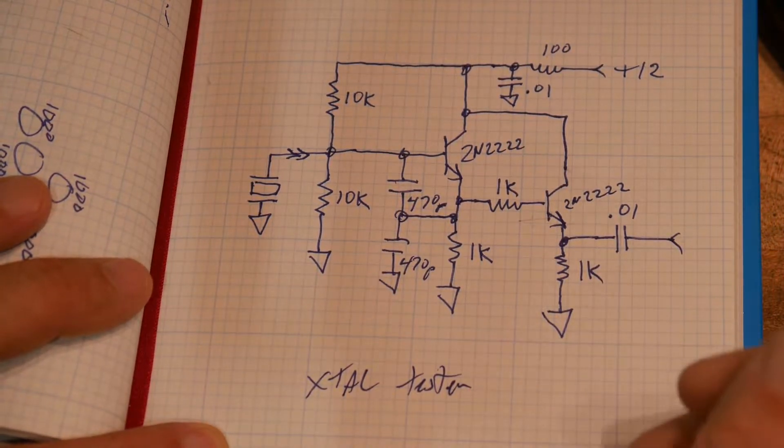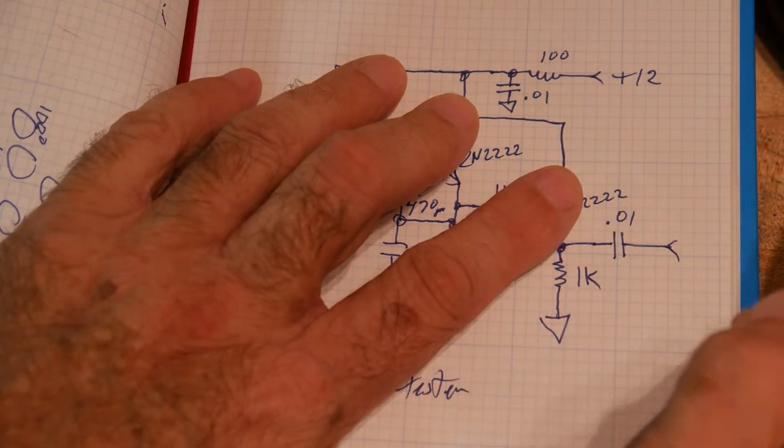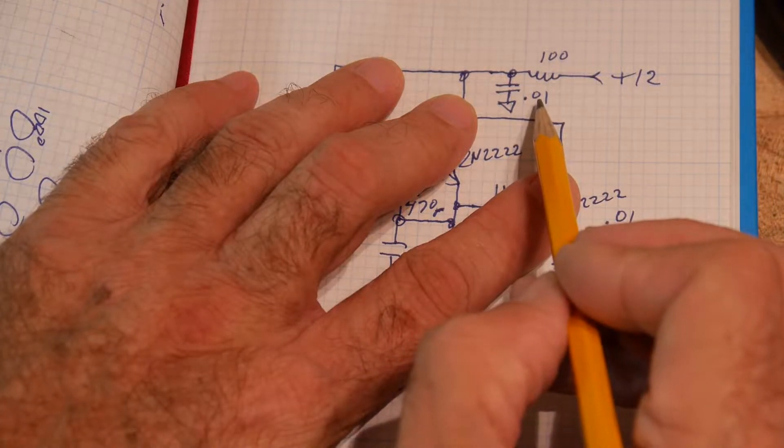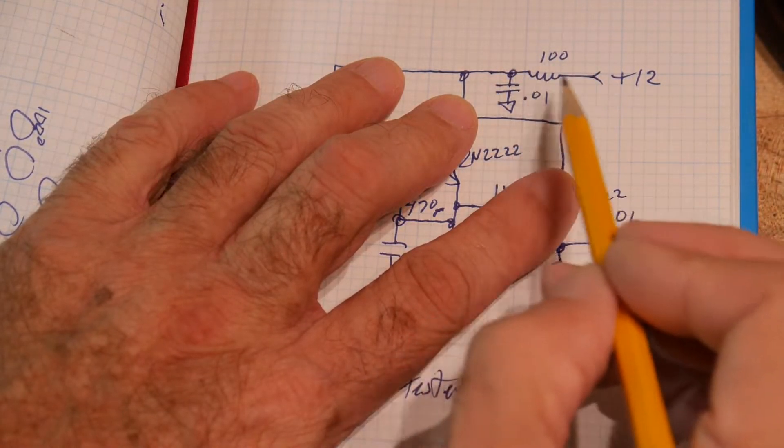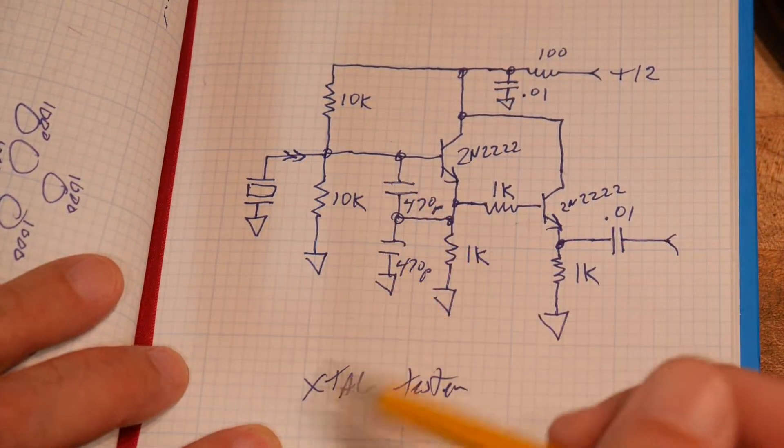So that's easy. 1K, 1K transistor. The voltage coming into the box goes through 100 ohms and 0.01 microfarads. So just a little filtering.